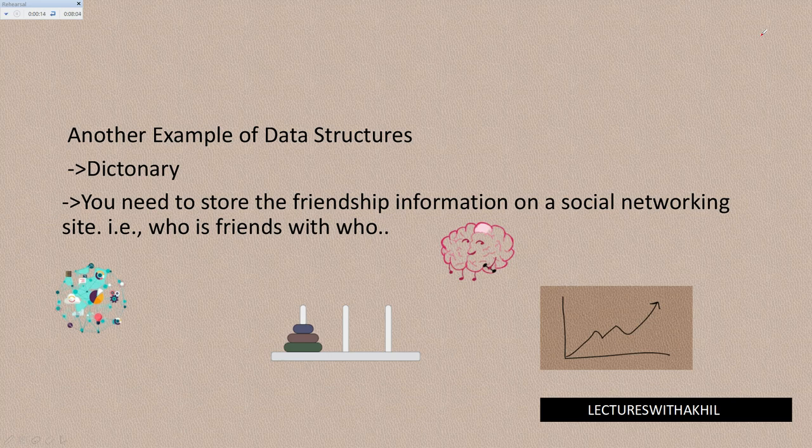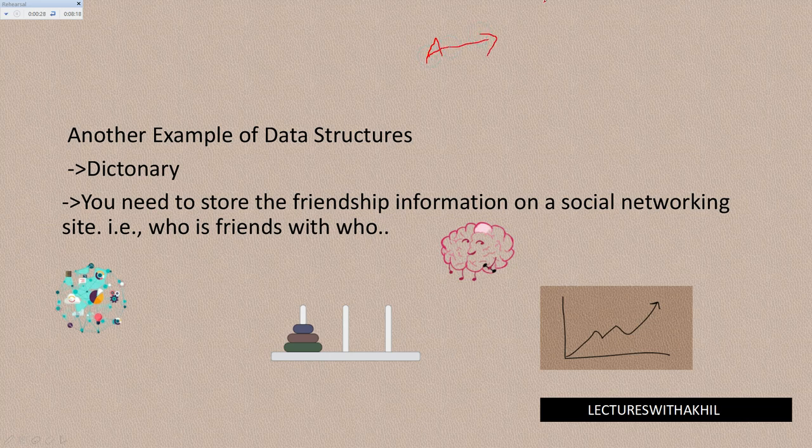If I need any word like 'data', I directly jump to the D section and search from there, because we know the dictionary is arranged in A to Z order.